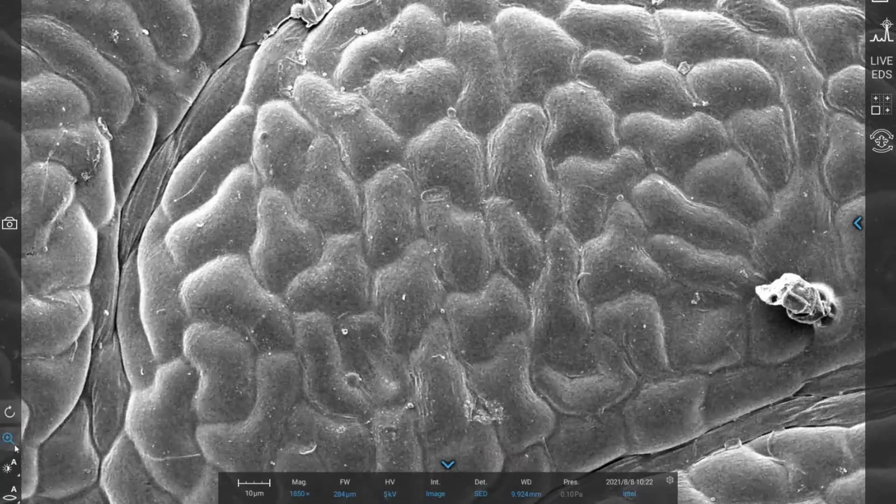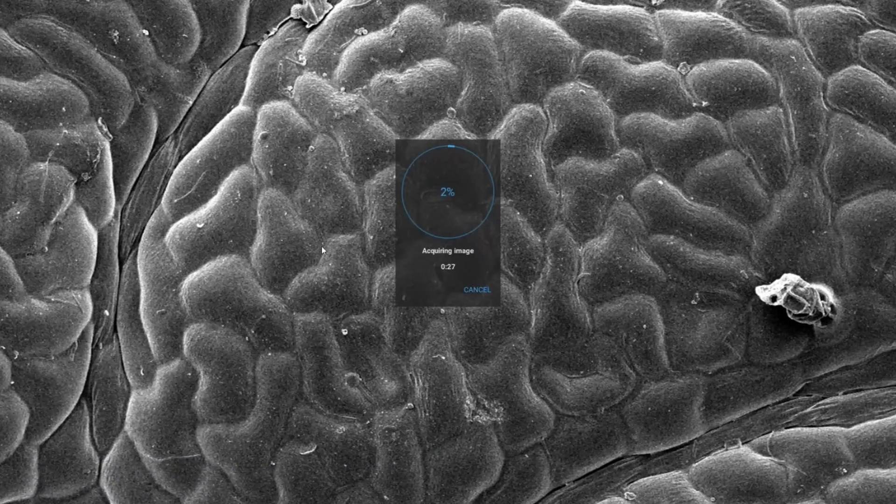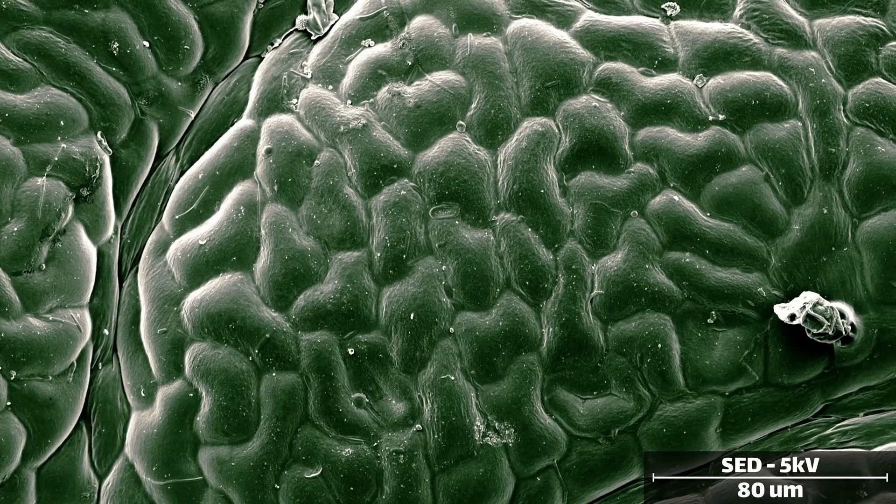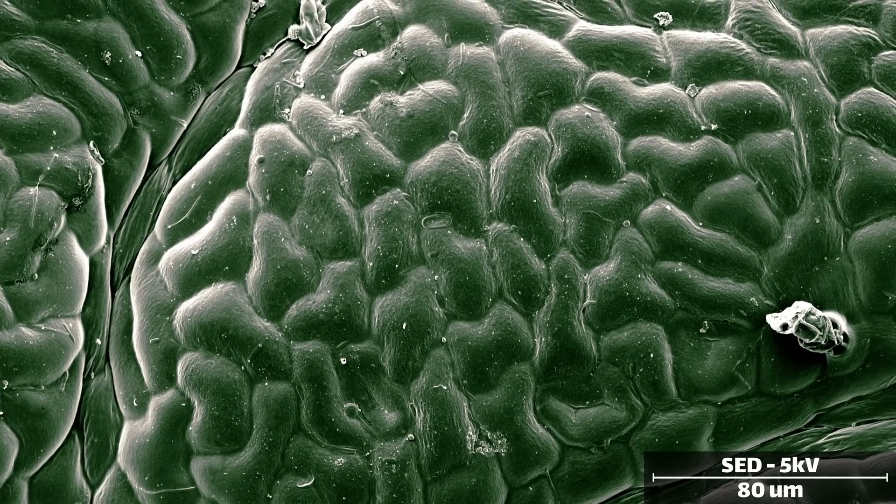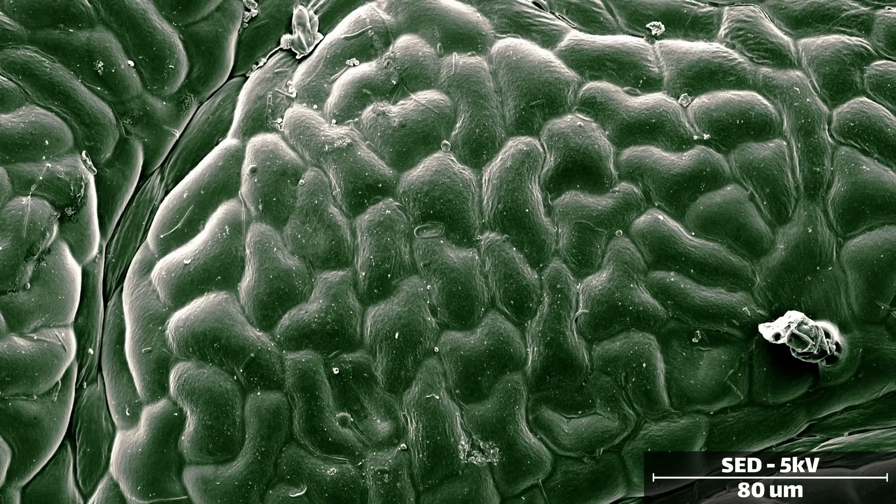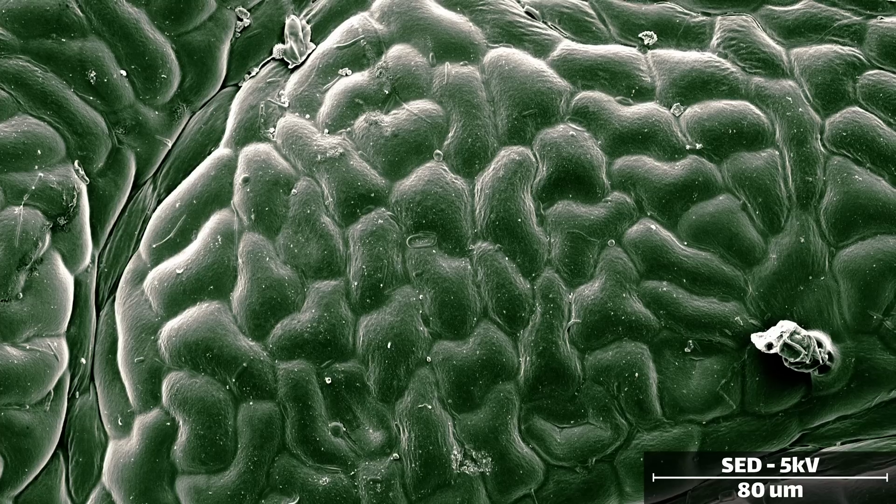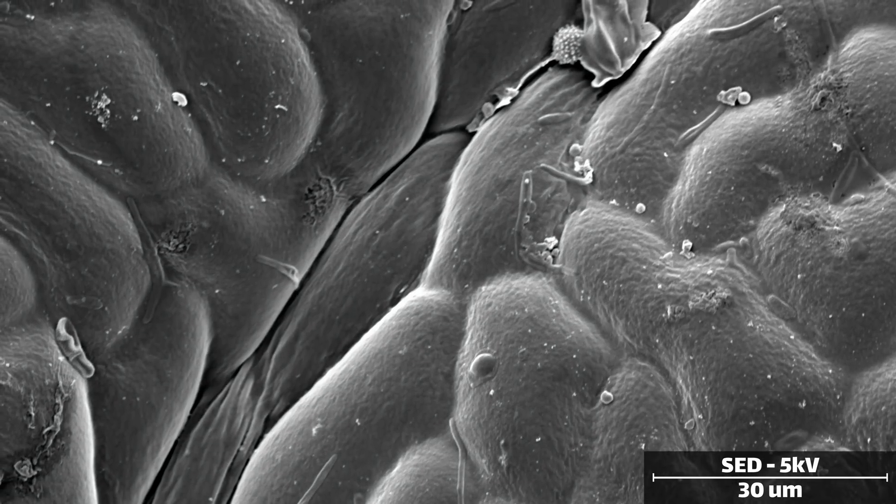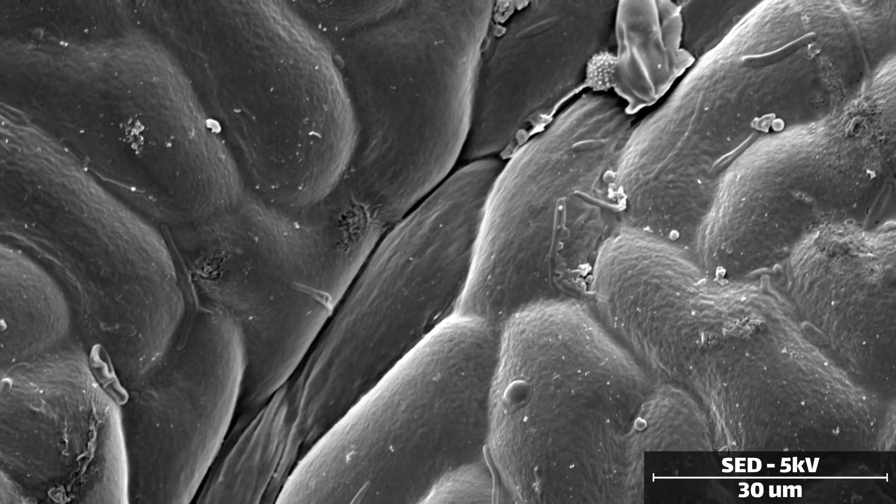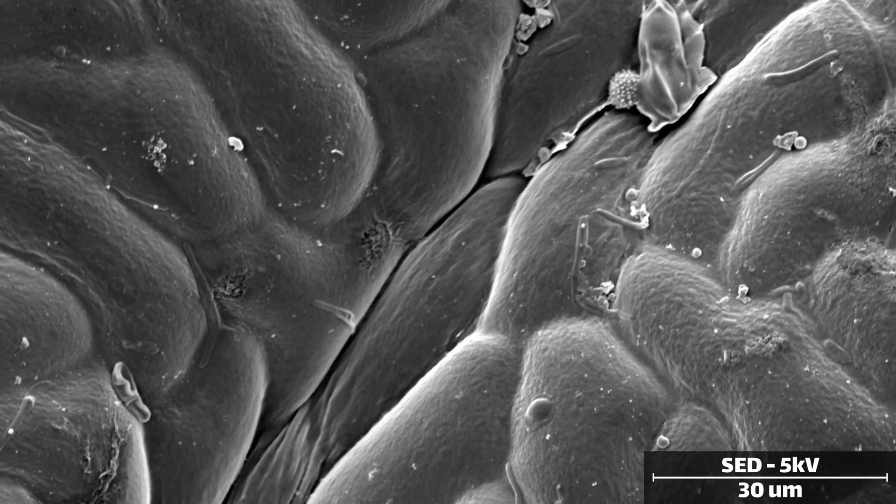Turning our attention back to the goldenrod, let's take a look at the leaves. While not as varied as the structures of the flower, there are still some interesting landmarks. Here on the top of the leaf, we see the upper epidermis. Each blob is a single cell, laid flat across the leaf, forming a protective barrier against the outside world.